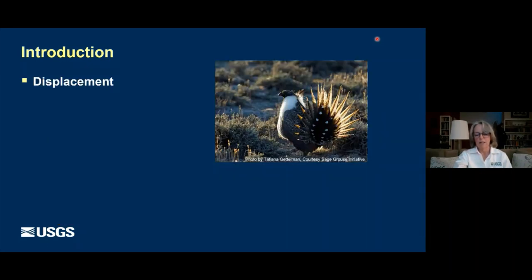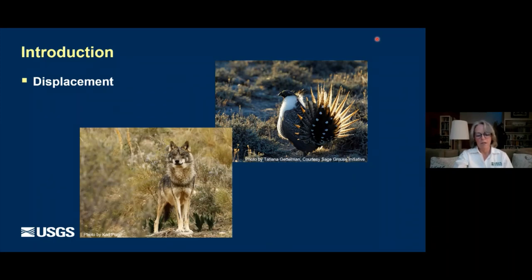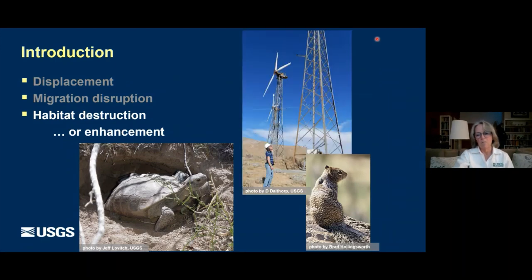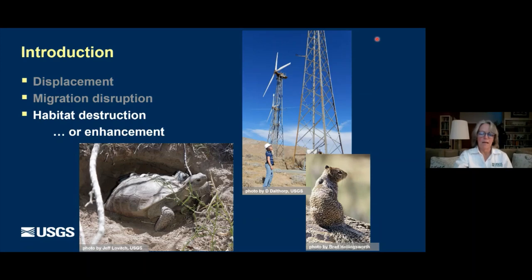First, we have displacement of species such as the sage grouse, which appears to move farther from turbines with each breeding season. Migration routes or home range can be disrupted, as has been shown in the Iberian wolf in Portugal. Habitat destruction can happen, particularly in the desert with solar facilities when desert tortoises are displaced. But occasionally there is environmental enhancement — in the Altamont, when turbines went in, grazing was stopped and rodenticides were no longer used. Rodent populations went up, and so did raptor populations. Everything's connected to everything.